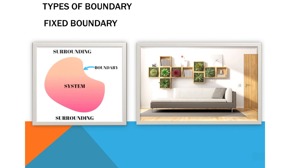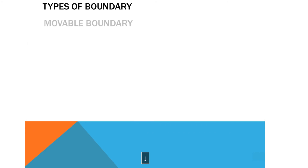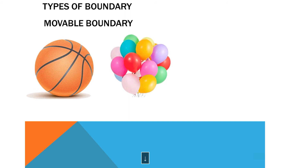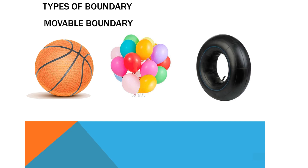The next one is the movable boundary. In a movable boundary the boundary changes. For example, when we inflate a balloon, its boundary changes — that is called a movable boundary. Similarly, a basketball and a tire tube are examples of movable boundaries.